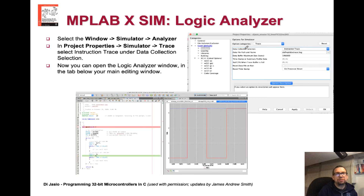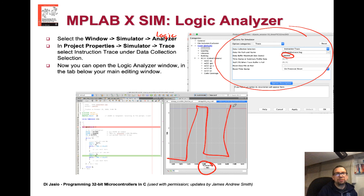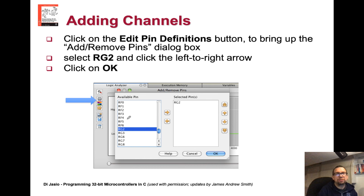You can also simulate it. There's a logic analyzer in the IDE — depending on your version, it's called Analyzer or Logic Analyzer. Go into Windows > Simulator > Logic Analyzer, or Project Properties > Simulator > Trace. You can modify the buffer size for capturing waveforms. You can choose which signal to look at — in this case, Port G Bit 2, to see if it's going on and off by putting breakpoints in. You can add other channels to analyze additional signals by clicking the hammer-and-wrench symbol and choosing different virtual pins.